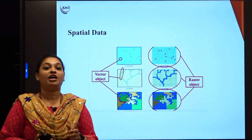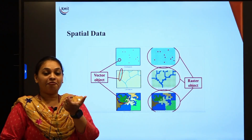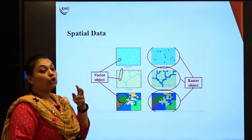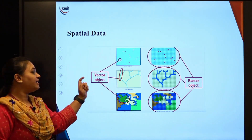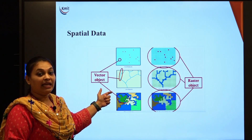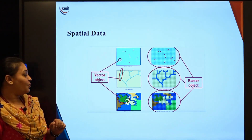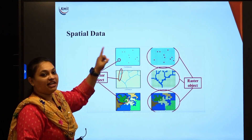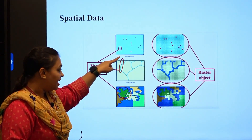Next is the spatial database. A good example is Google Maps, which you all use at least once a day. You give a location or search for something, it extracts the information and displays the result. To display that, spatial data can be represented in two forms: one is a vector object and the other is a raster object. From complete geographical information, you can select a specific object or place.